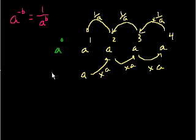But wouldn't it be nice if a to the 0 retained this pattern? That every time you decrease the exponent, you're dividing by a. So if you're going from a to the 1st to a to the 0, wouldn't it be nice if we just divided by a? So let's do that.